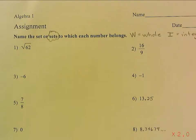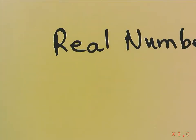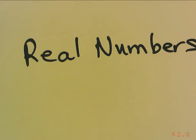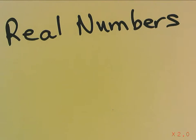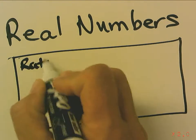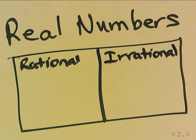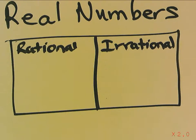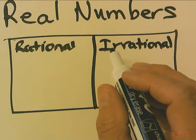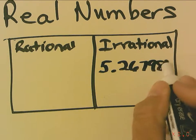Before we do this, let's just review the real number system. Real numbers consist of rational or irrational. An irrational number is a number that has decimals that are non-repeating and non-terminating — something like 5.26798 dot dot dot.